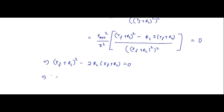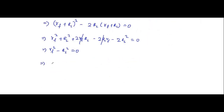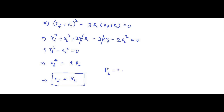Expanding: RF² + RL² + 2RF·RL − 2RL·RF − 2RL² = 0. The 2RF·RL terms cancel, leaving RF² + RL² − 2RL² = 0, which gives RF² − RL² = 0. That implies RF = ±RL, and since resistance cannot be negative, RF must equal RL. Therefore the load resistance should be equal to the diode forward resistance. It is proved.